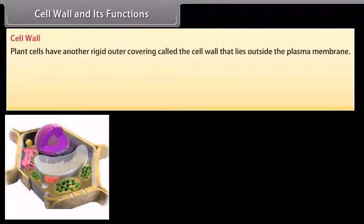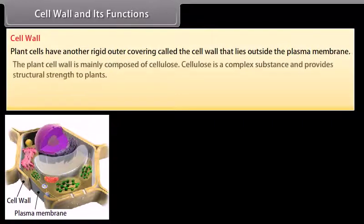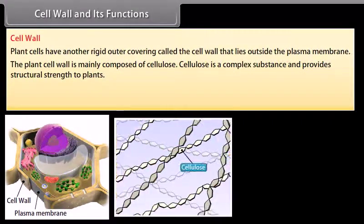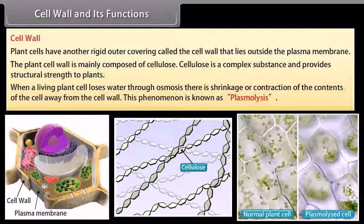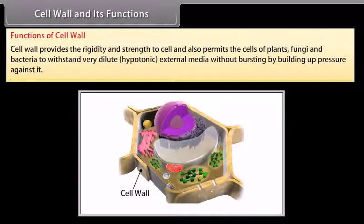Cell wall and its functions: Plant cells have another rigid outer covering called the cell wall that lies outside the plasma membrane. The plant cell wall is mainly composed of cellulose, a complex substance that provides structural strength to plants. When a living plant cell loses water through osmosis, there is shrinkage or contraction of the contents of the cell away from the cell wall — this phenomenon is known as plasmolysis. The cell wall provides rigidity and strength to the cell and also permits the cells of plants, fungi, and bacteria to withstand very dilute hypotonic external media without bursting.